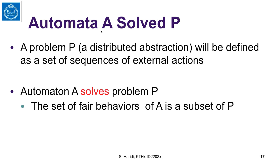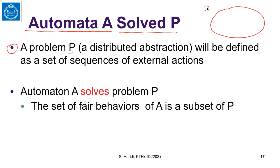What does it mean for an automaton A to solve a problem P? A problem P, which is a distributed abstraction, is defined as a set of sequences of external actions — these are the set of all permissible behaviors captured by P. Automaton A solves problem P if the set of fair behaviors of A is a subset of the set P.